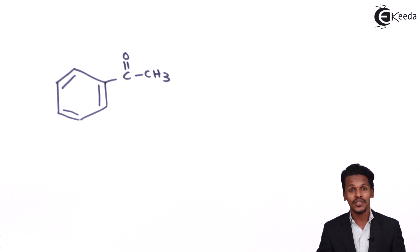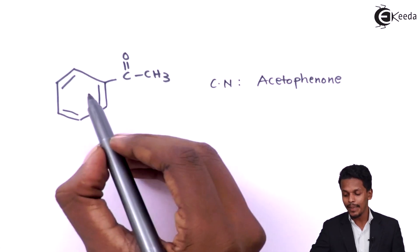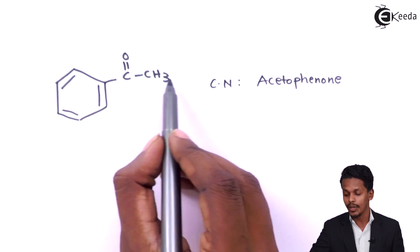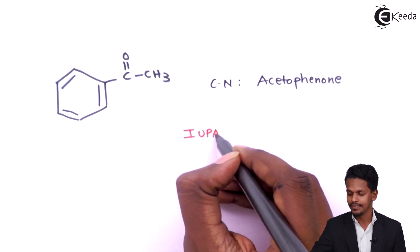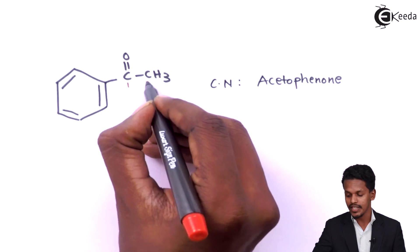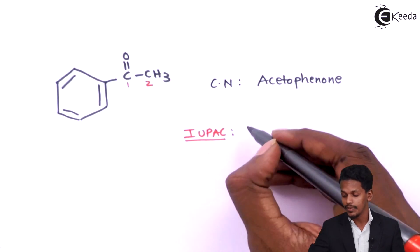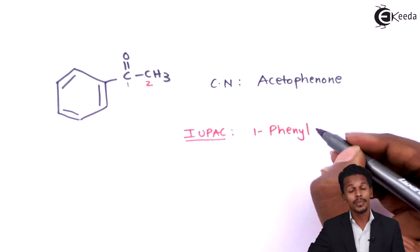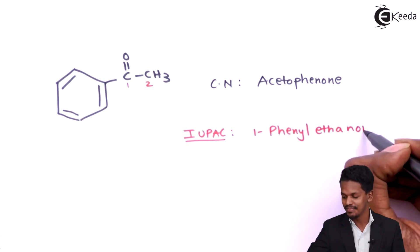The next compound has the common name acetophenone. Whenever a benzene ring is attached to a carbonyl group, it is called phenone. There are 2 carbons in the straight chain. For IUPAC nomenclature, carbon 1 has a phenyl group attached. With 2 carbons the base is ethane, and since it is a ketone, the IUPAC name is 1-phenylethan-1-one.